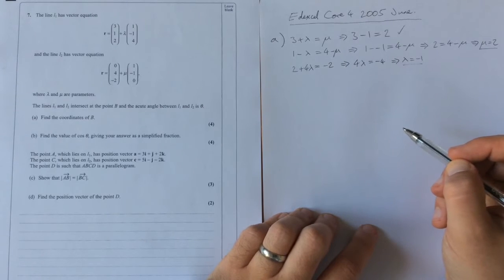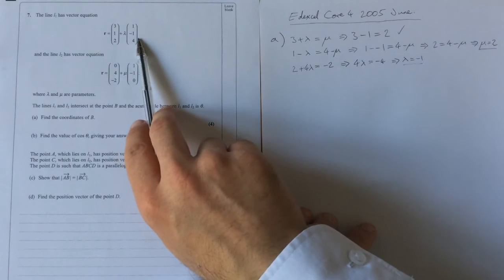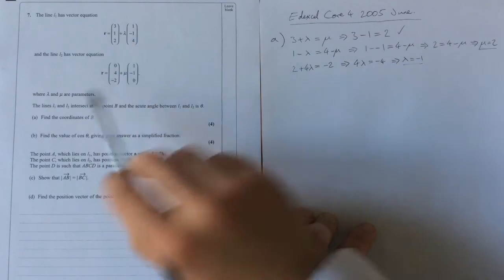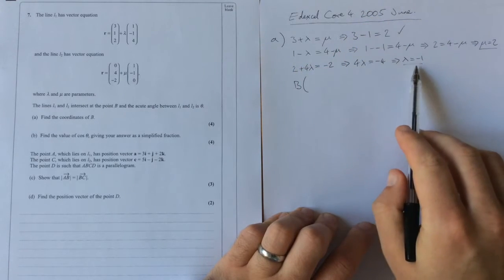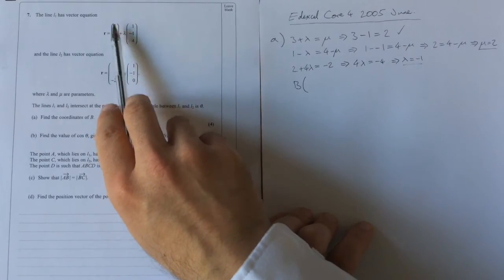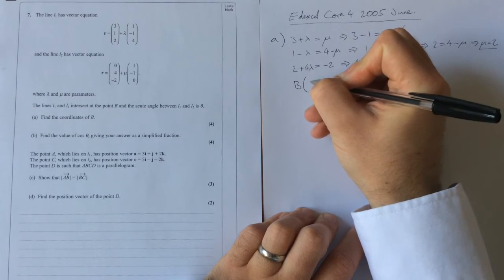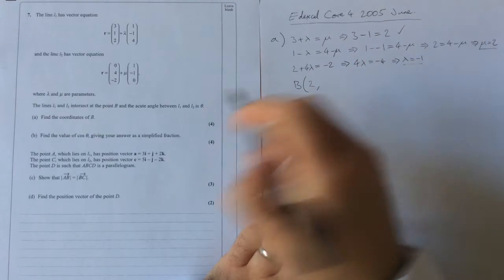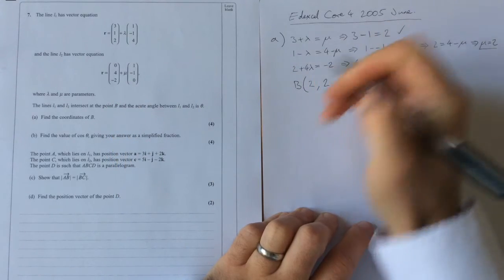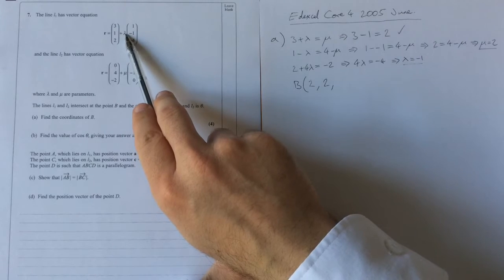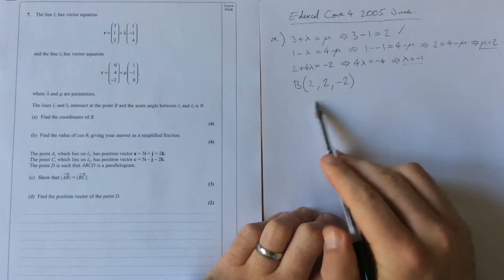Now that's all checking, we don't actually need to do all of that. What we can do is we can take one of these two values and simply feed it back into our equation. So I'm going to take lambda is minus 1 to work out the coordinates. So for b, the x coordinate, lambda is minus 1, so 3 plus minus 1 times 1 is 3 minus 1 is 2. 1 plus minus 1 times minus 1, so 1 plus 1 is 2. And 2 minus 1 times 4, so 2 minus 4 is minus 2. And there is our position b.